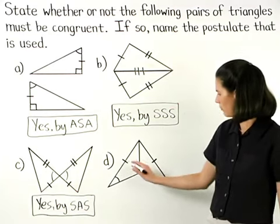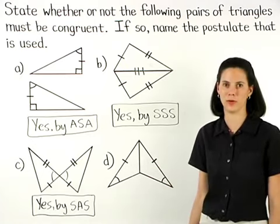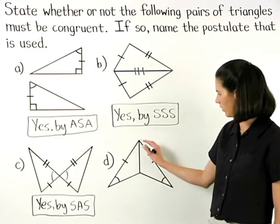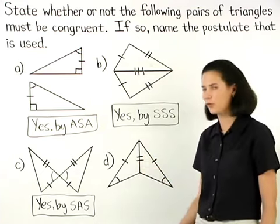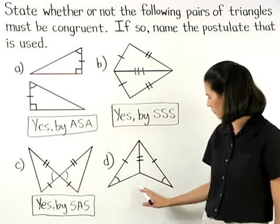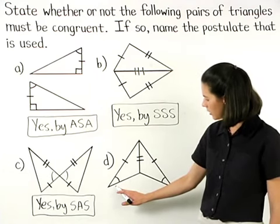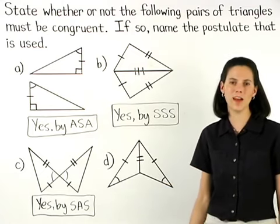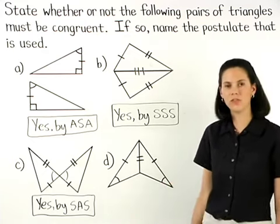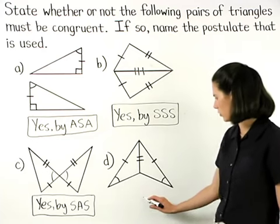In Part D, we have one pair of corresponding sides marked as congruent and a pair of corresponding angles marked as congruent, so we need a third pair of corresponding parts. Notice that these triangles share a side, so we can mark this side as congruent to itself. We now have two pairs of corresponding sides and a pair of corresponding angles, but notice that the angle in each triangle is not included between the two sides, so we cannot use side-angle-side. Instead, we have side-side-angle, which is not one of our postulates for proving that triangles are congruent. So we say that no congruence can be determined.